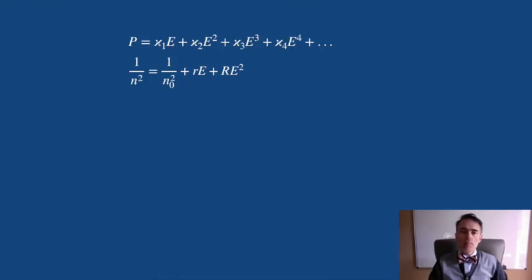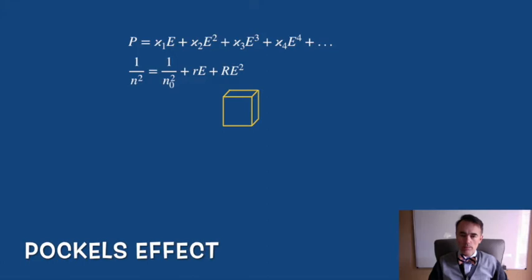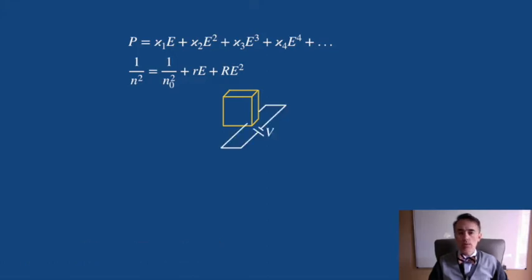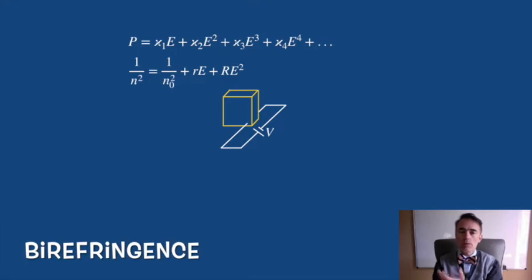Let's describe the Pockel's effect. If we apply an intense constant electric field, a DC field, we are going to induce nonlinearities in the material, even in materials that are isotropic. This external field is going to induce birefringence to the crystal.